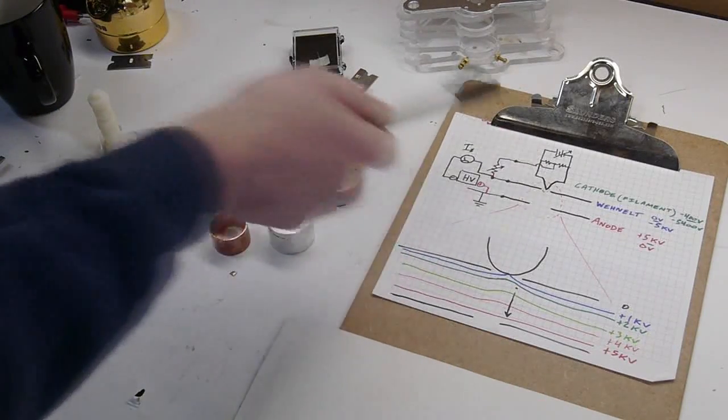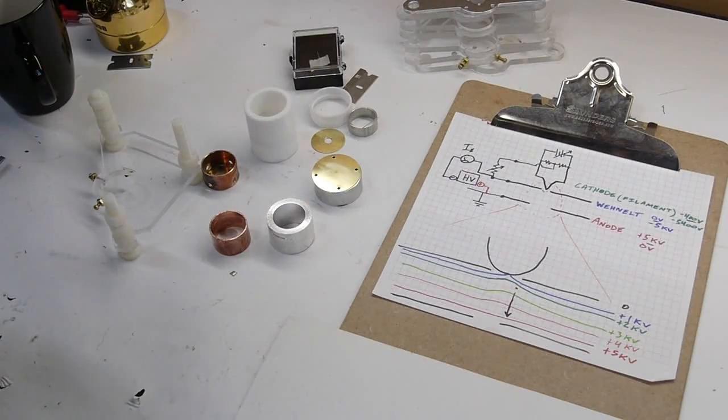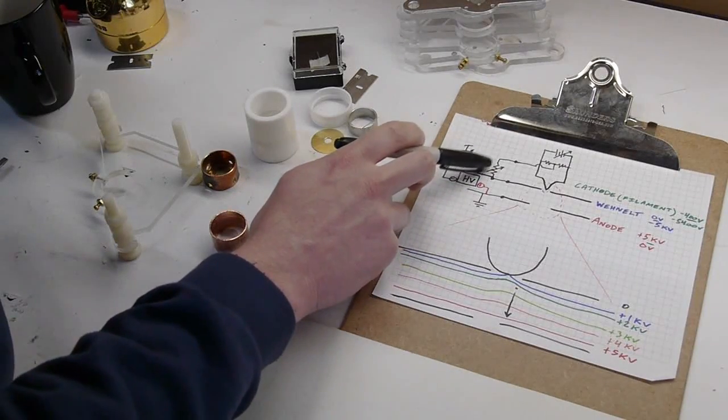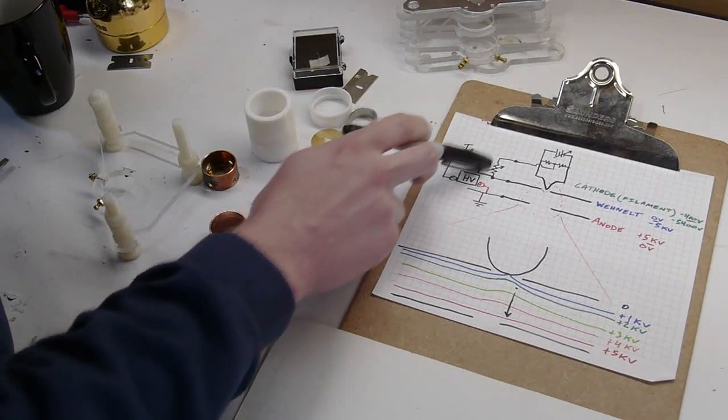The combination of the Wenelt and the voltage on the cathode controls how many electrons are produced by this gun, and the setting is actually this variable resistor here, known as a bias resistor.